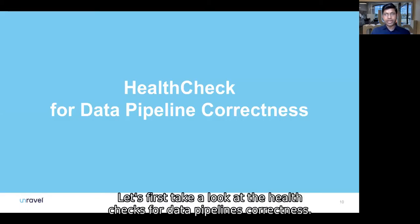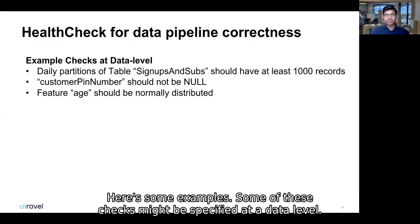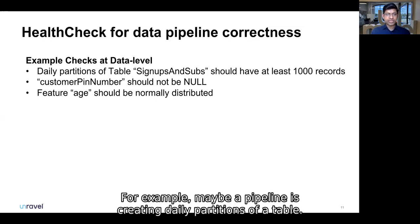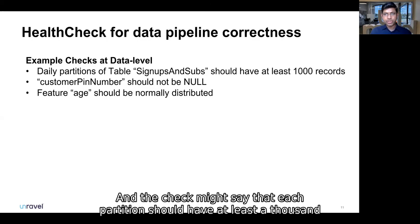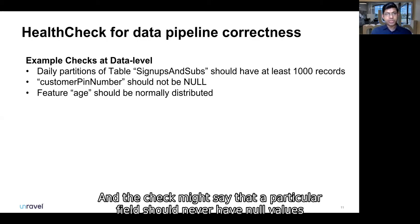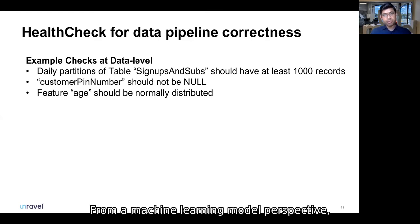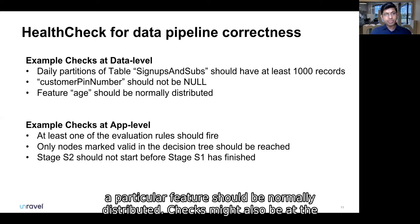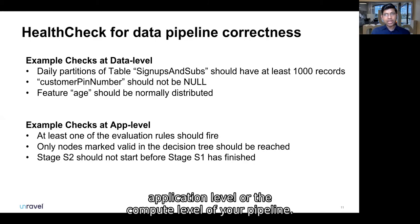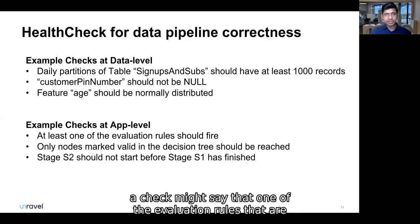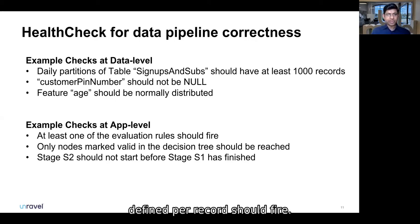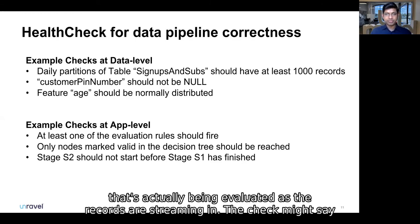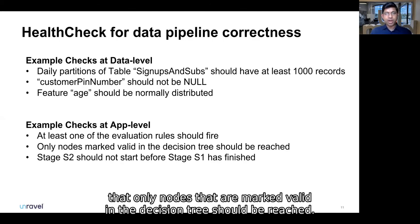Let's first take a look at the health checks for data pipeline correctness. Some of these checks might be specified at a data level. For example, maybe a pipeline is creating daily partitions of a table, and the check might say that each partition should have at least a thousand records, or that a particular field should never have null values. From a machine learning modeling perspective, you might have features with checks — for example, a particular feature should be normally distributed. Checks might also be at the application or compute level of your pipeline — for example, a check might say that at least one evaluation rule defined per record should fire, or that only nodes marked valid in a decision tree should be reached.